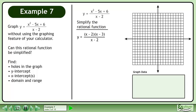Simplify the rational function. The trinomial in the numerator factors to x minus 2 times x minus 3. Cancel x minus 2 from the numerator and denominator, leaving y equals x minus 3.